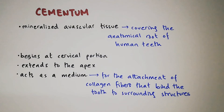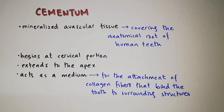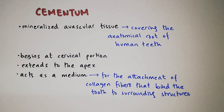Unlike bone, cementum is avascular. Cementum is basically a hard avascular connective tissue that covers the anatomical roots of human teeth. It begins at the cervical portion and extends to the apex. It acts as a medium for the attachment of collagen fibers that bind the tooth to the surrounding structures like the alveolar bone.